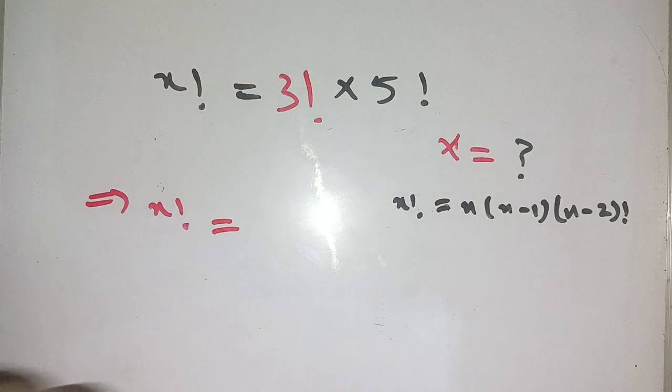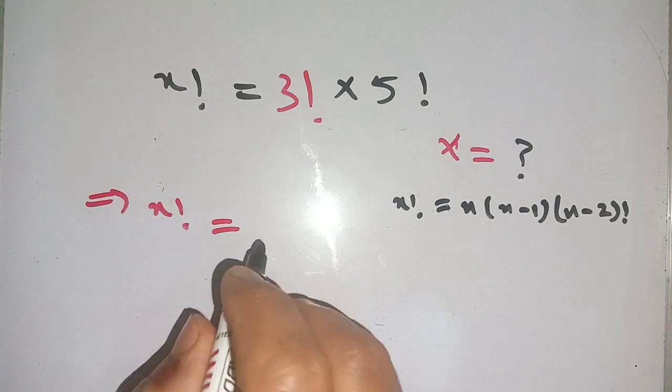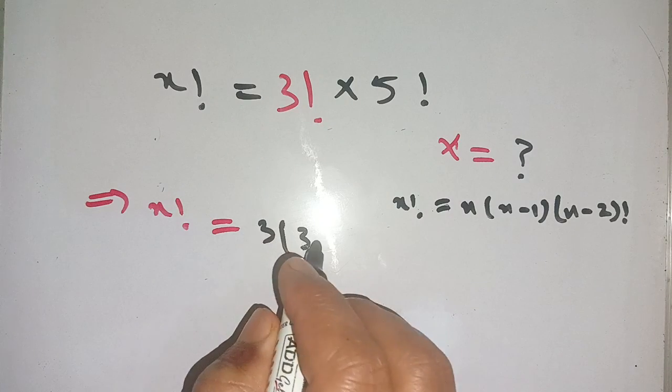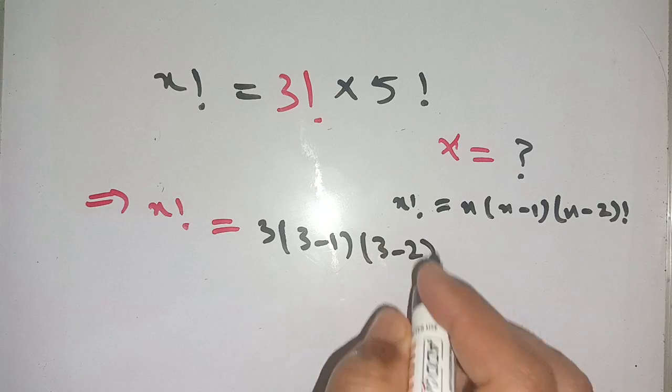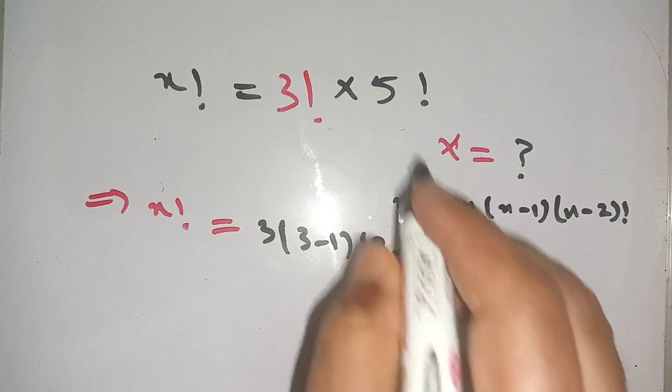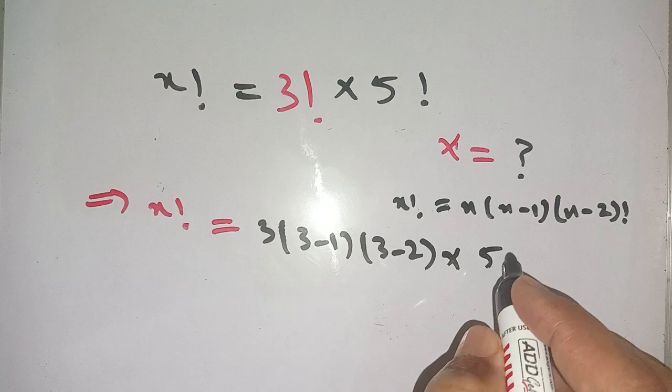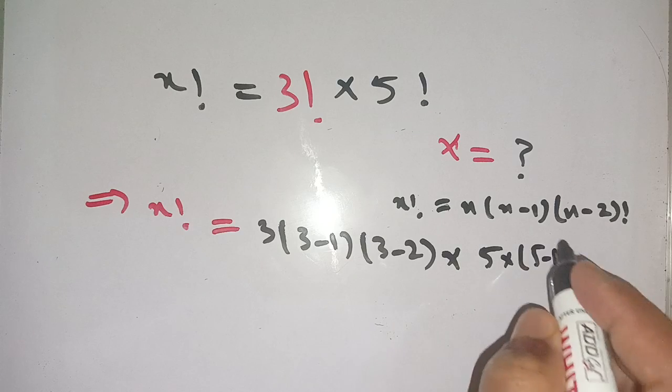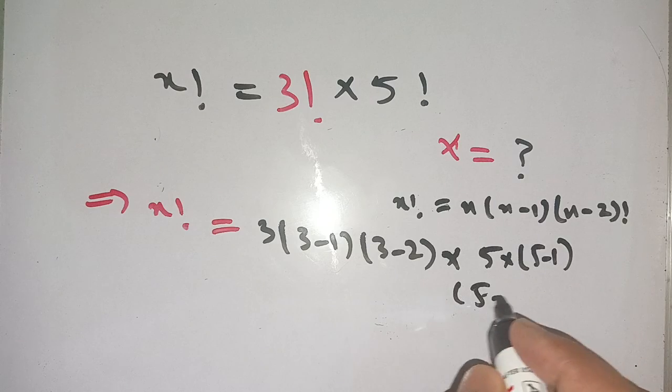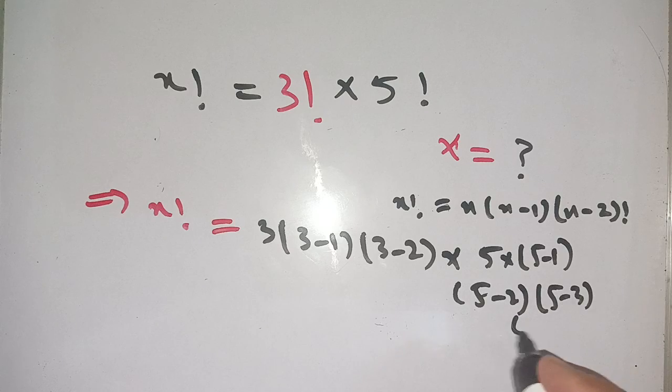Now we can write this as x factorial is equal to 3 factorial, which can be written as 3 times 3 minus 1 times 3 minus 2. And 5 factorial can be written as 5 times 5 minus 1 times 5 minus 2 times 5 minus 3 times 5 minus 4.